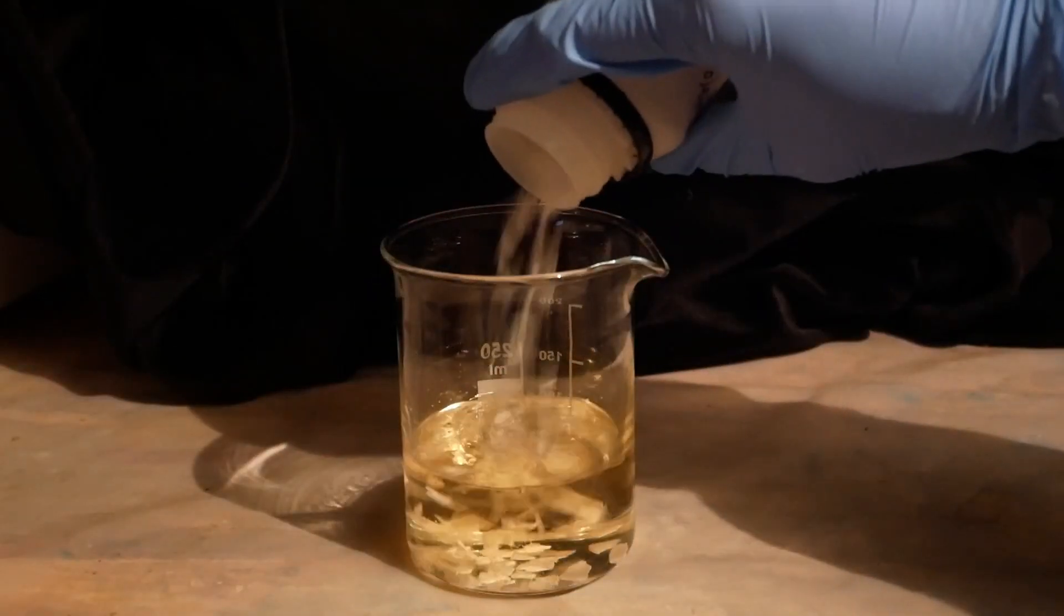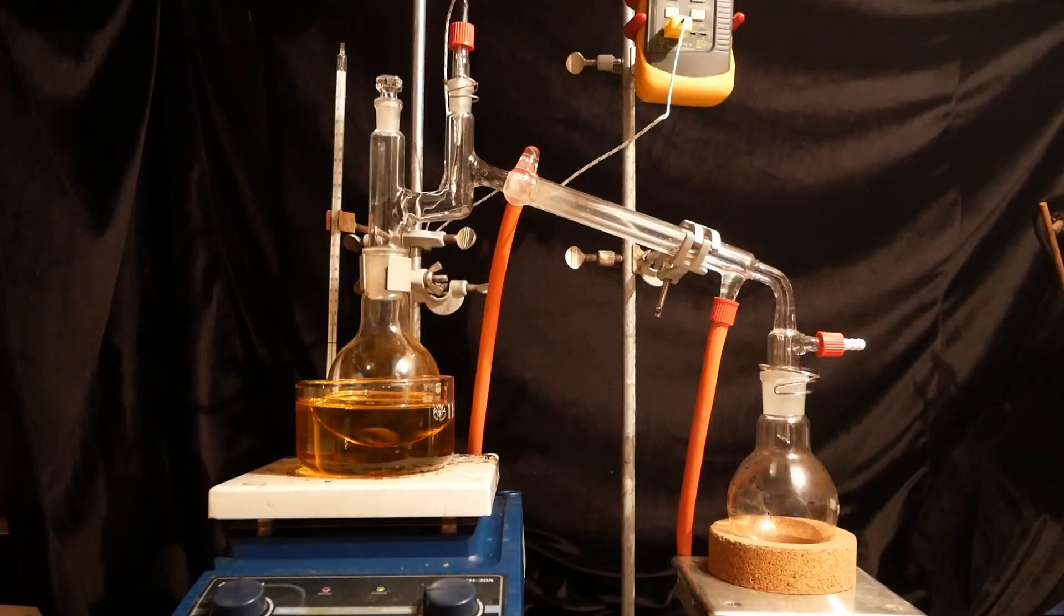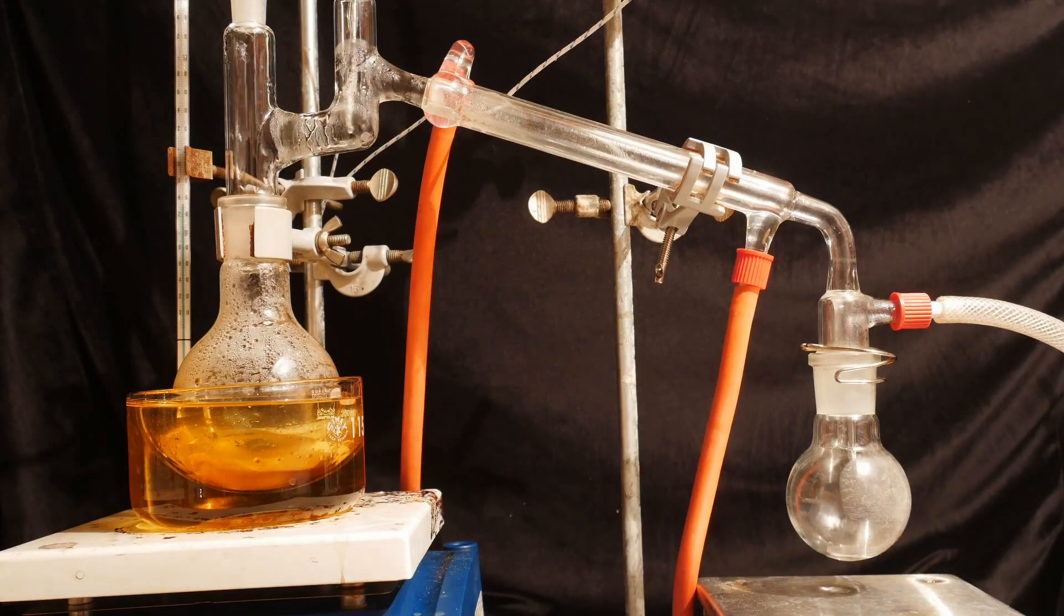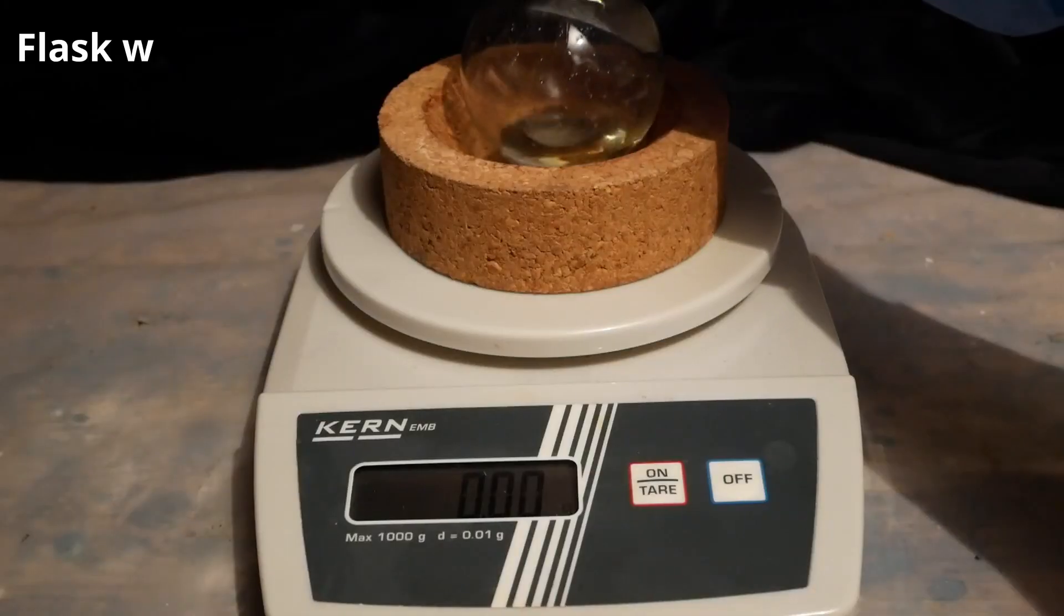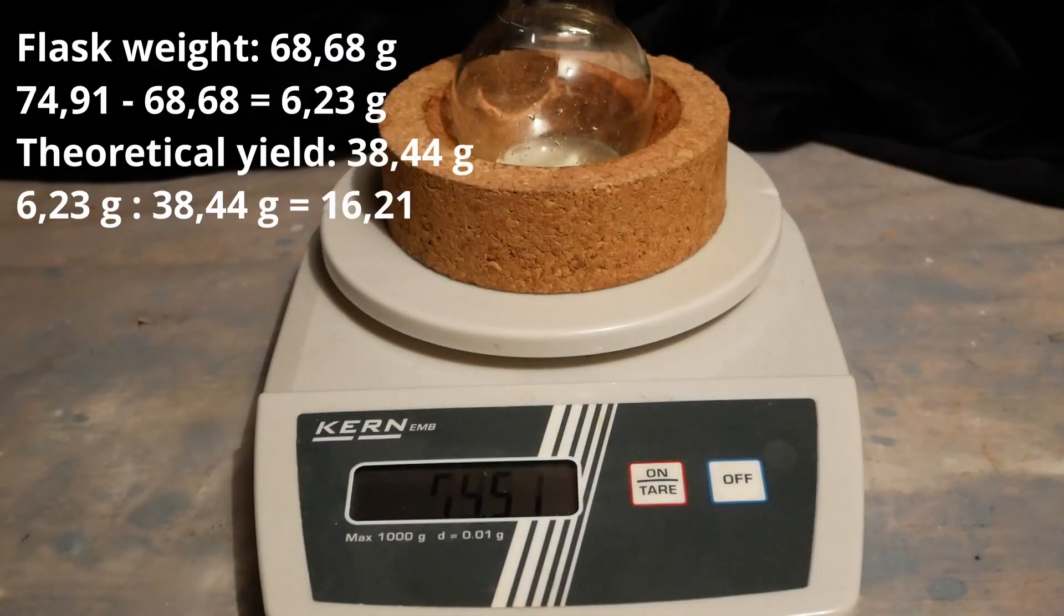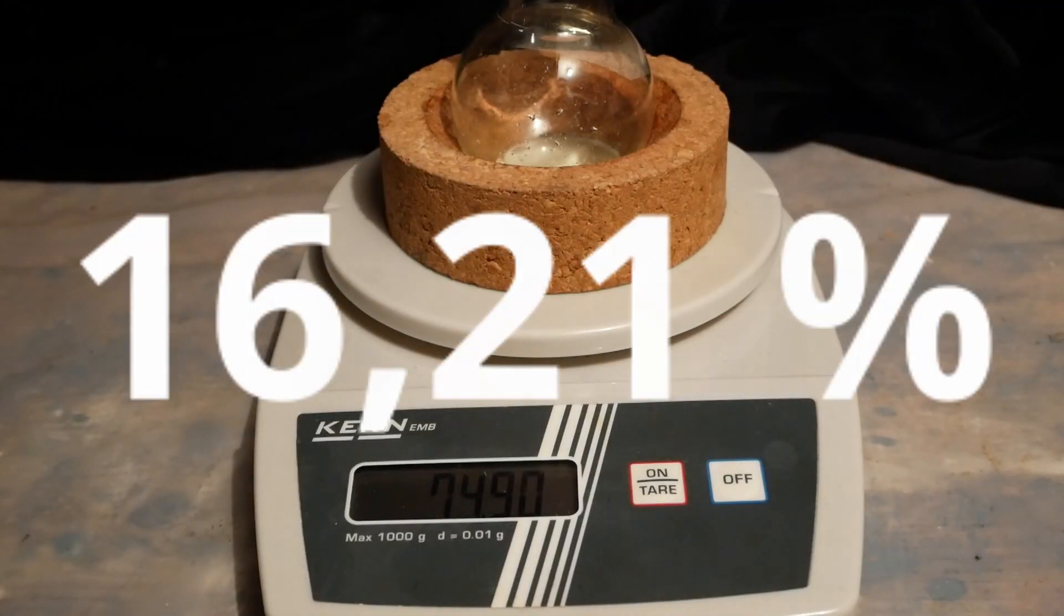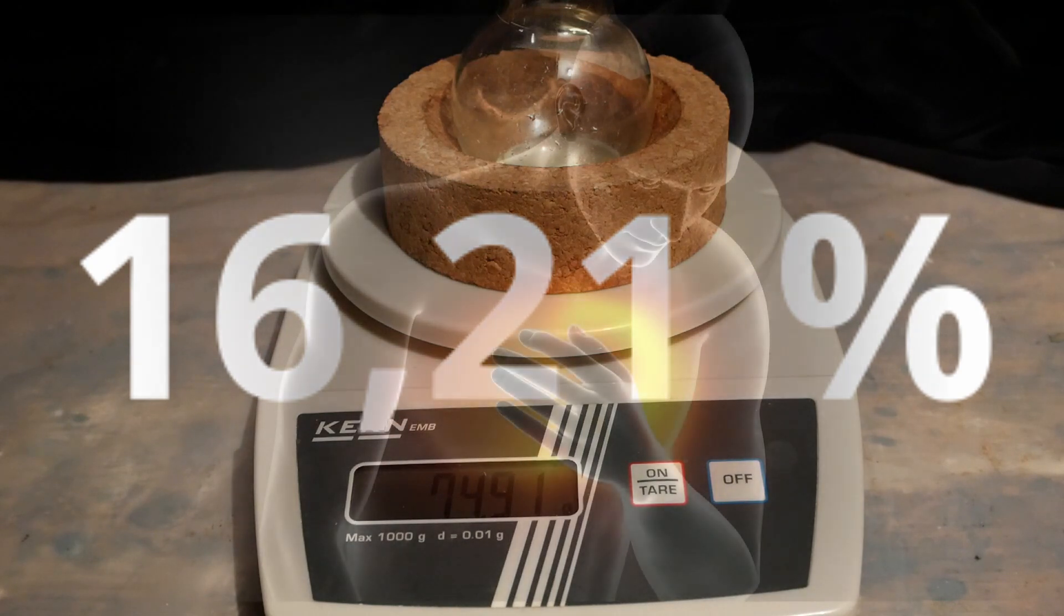Added salt to precipitate the aniline and extracted three times with DCM. Dried the extracts over potassium hydroxide, distilled off the DCM and then vacuum distilled the aniline. The product is much less yellow this time so I produced a purer product in this run. But the yield is still garbage. In fact, it's even worse than the last run.